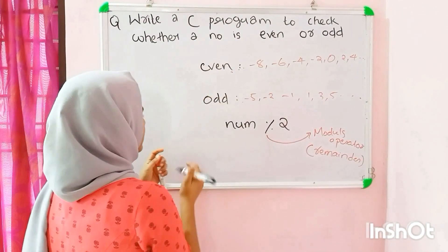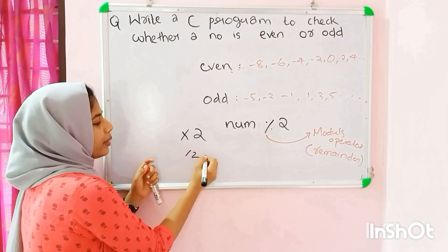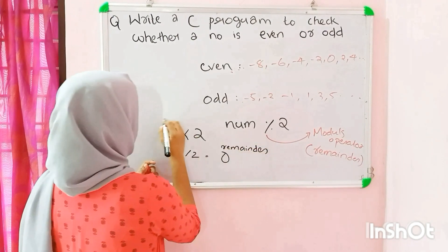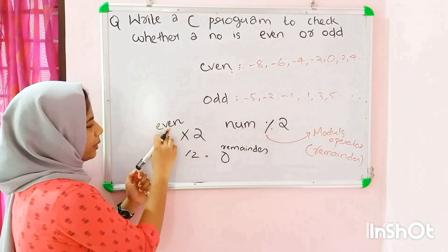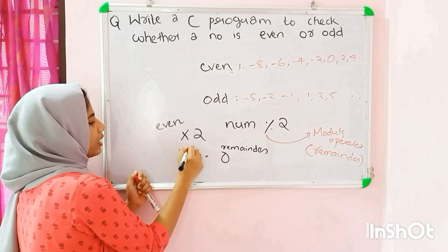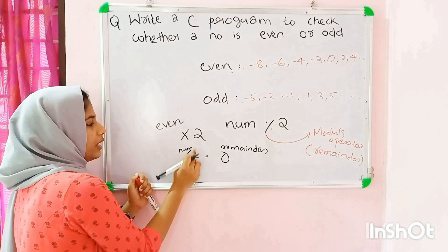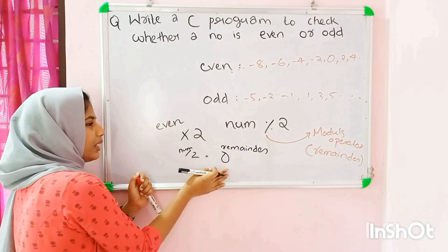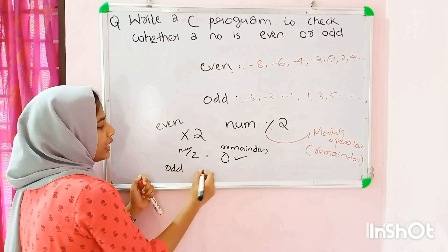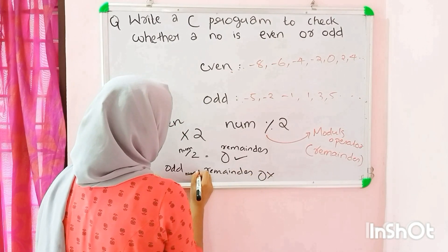If we say this number, it is a multiple of two. If we say this number, the remainder is zero. We have a multiple of 2. If we divide that number, we get remainder 0. We have remainder 0, and we have a multiple of 2.